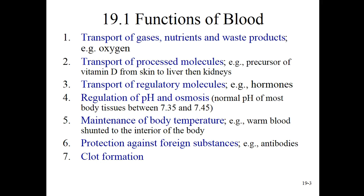Blood is a lot more interesting than you might think. Look at all the different functions: transport of gases like oxygen and carbon dioxide, nutrients like amino acids, fatty acids, and cholesterol, and waste products like urea and bilirubin — all flowing through the blood. It's the highway system of our body. Transport of processed molecules also, like the precursor of vitamin D from the skin to the liver and kidneys, and fatty acids and triglycerides from our diet into LDL cholesterol.